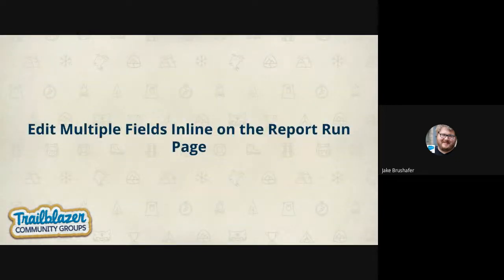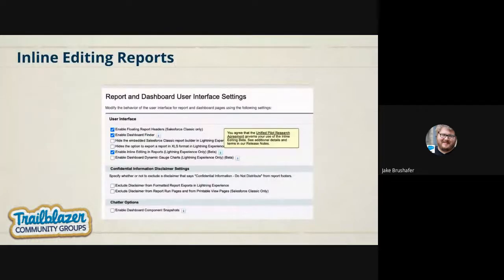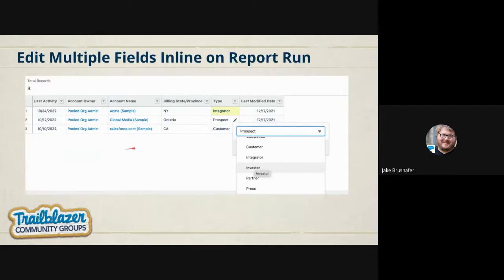The last feature is editing multiple fields inline on the report run page. You do have to enable this — there's an 'Enable Inline Editing in Reports' setting. This is still a beta feature. If you remember the beta from Winter, when you made a change you didn't see it happen until you hit 'Run Report.' Now you see it in live time — it actually highlights the color so you can see the different changes as they happen, without having to run the report first.